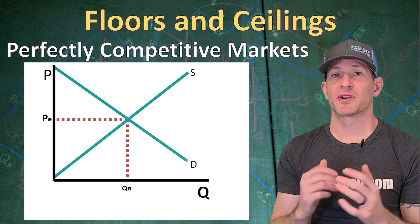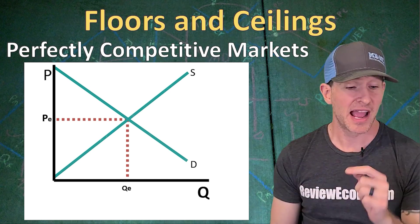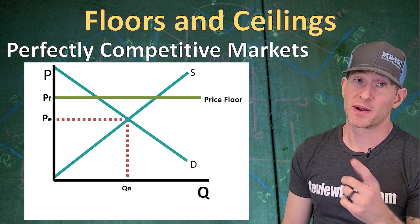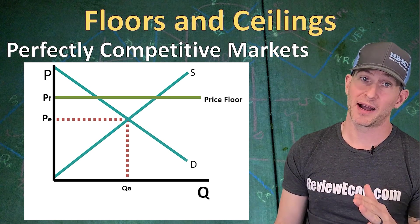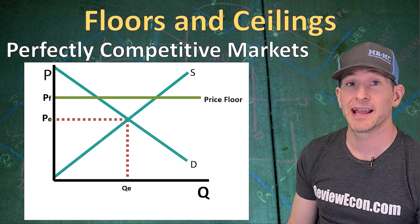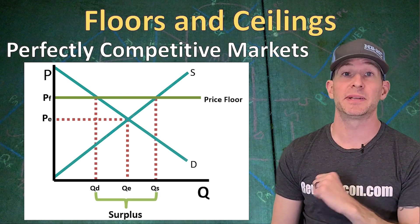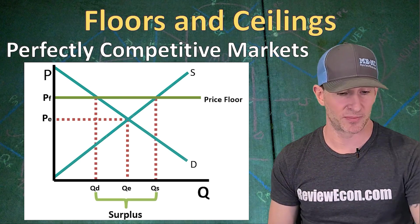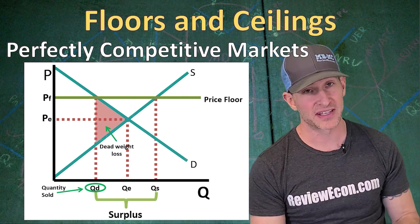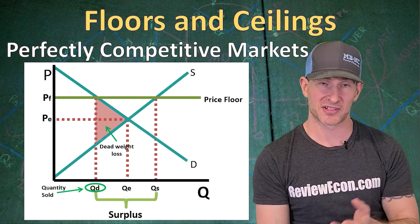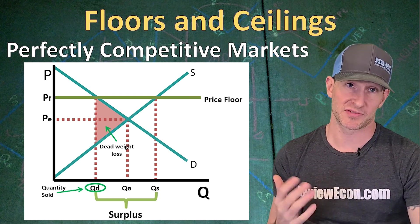The next government regulation we're going to look at is price floors. Here we have a perfectly competitive market with a supply curve and a demand curve, and we're going to put a price floor on that market. Remember, the price floor goes above equilibrium if it's going to be effective. If the price floor is below equilibrium, it will be non-binding and the market will seek the equilibrium of PE and QE. But if we have a price floor above equilibrium, it is going to cause quantity demanded to be less than quantity supplied, and we are going to have a surplus. That means QD is the only quantity sold, and we're going to have, as a result of this government intervention, a creation of deadweight loss — a decrease in efficiency.